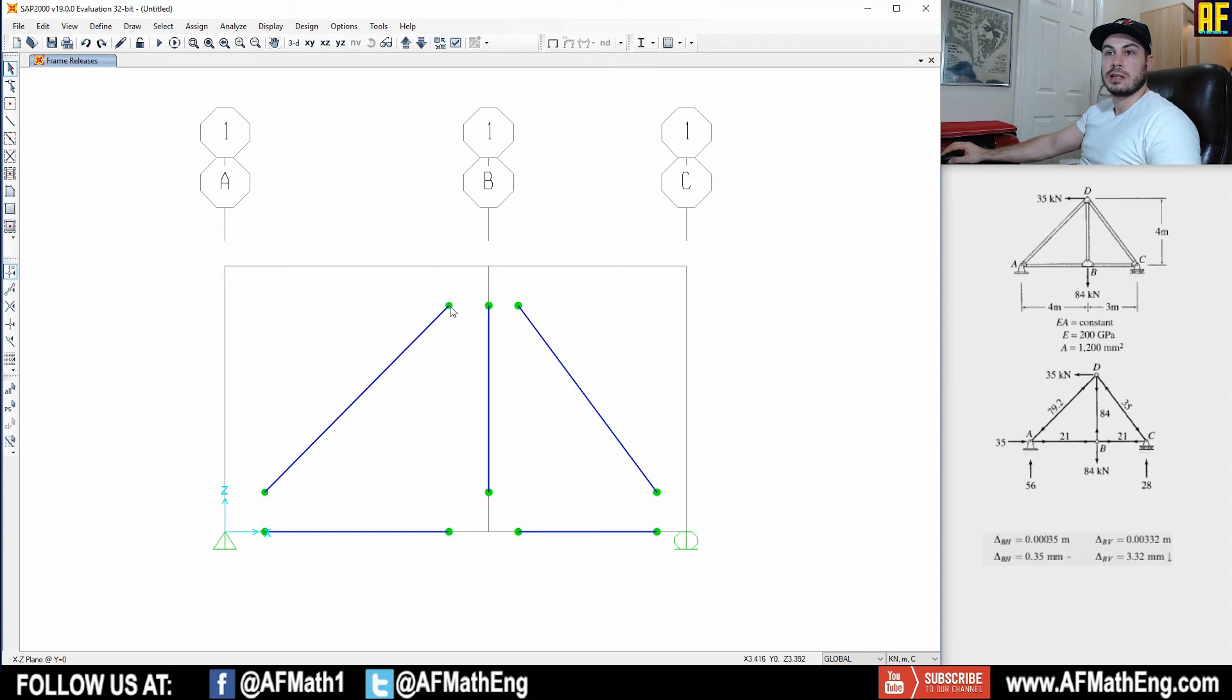And you can see these little green dots come up. So that means that our end members have been released against rotation. They are allowed to rotate now. So these are all pin members and it is now a truss that is pinned. As you remember, trusses are always pinned. And now we can go ahead and we can start to analyze the structure.